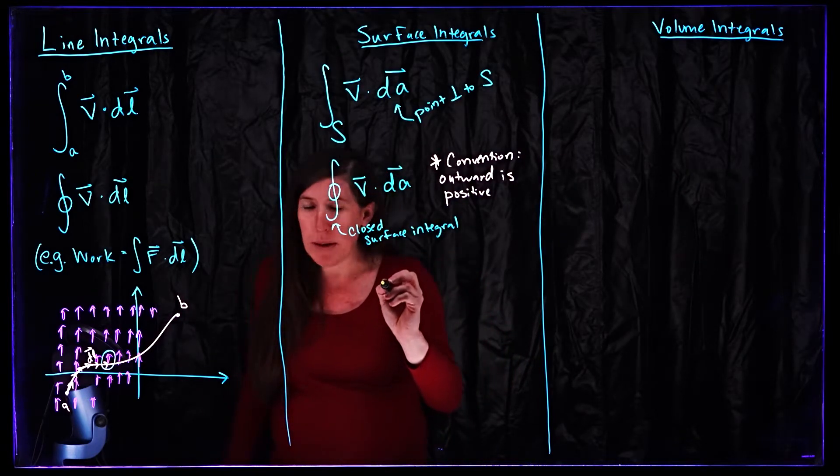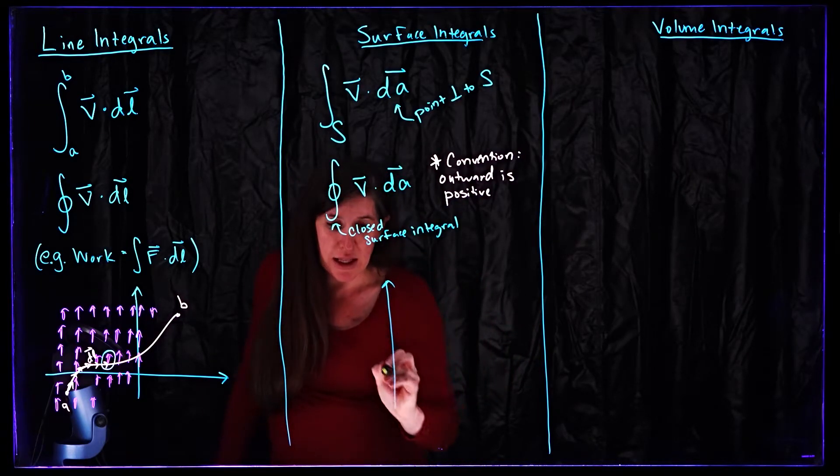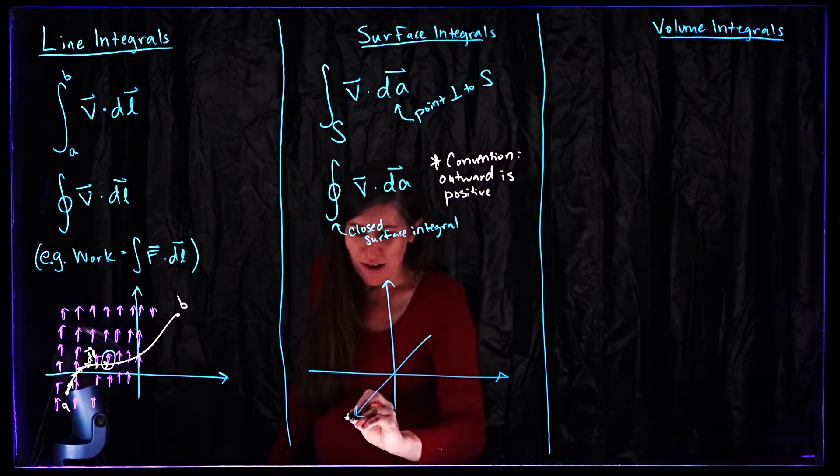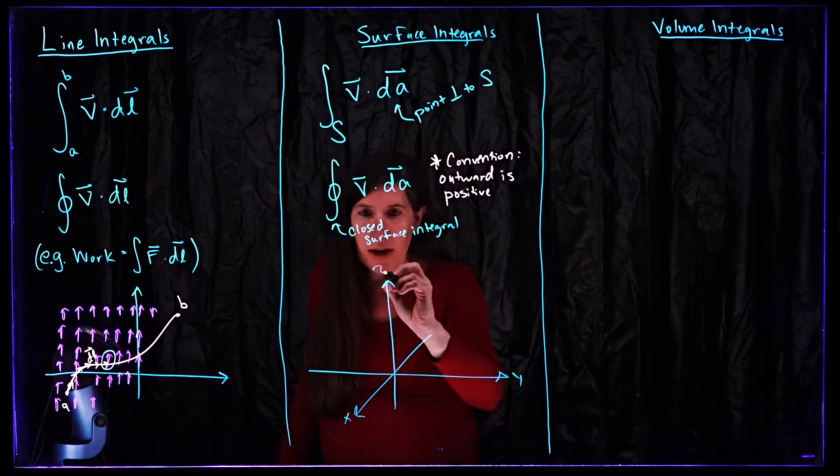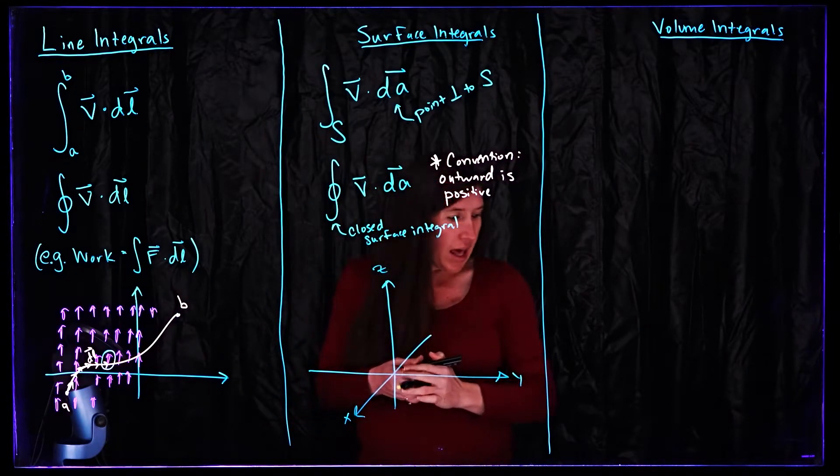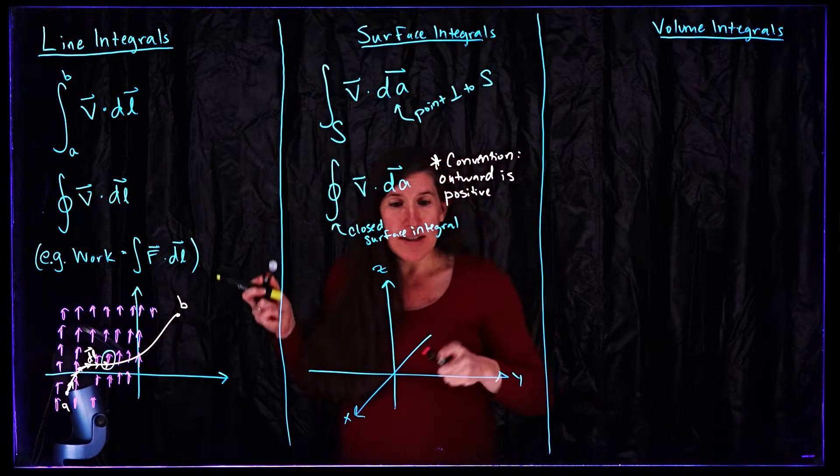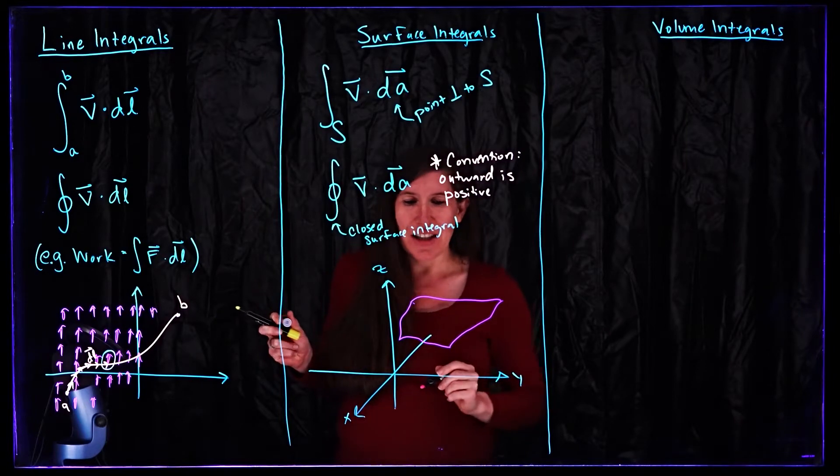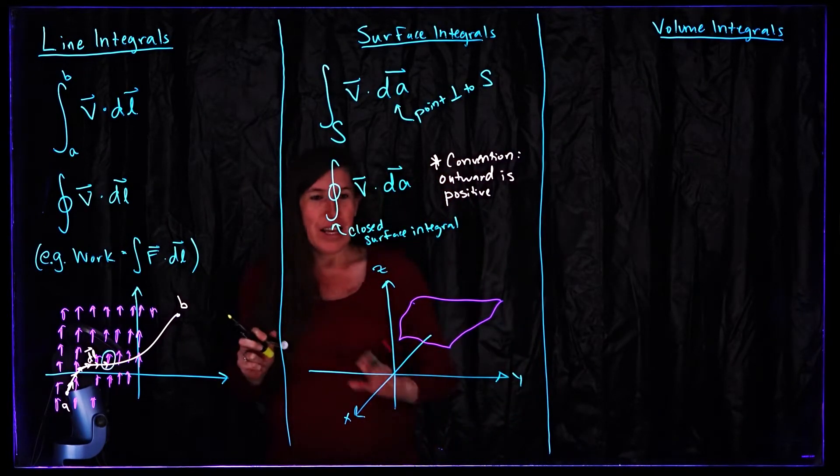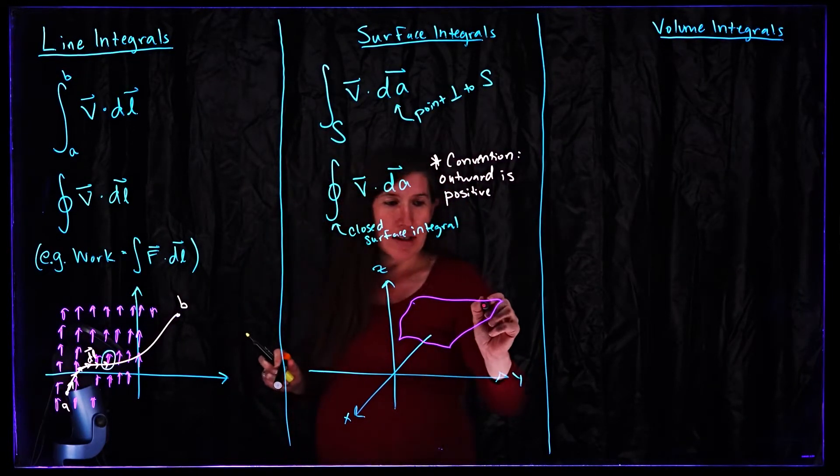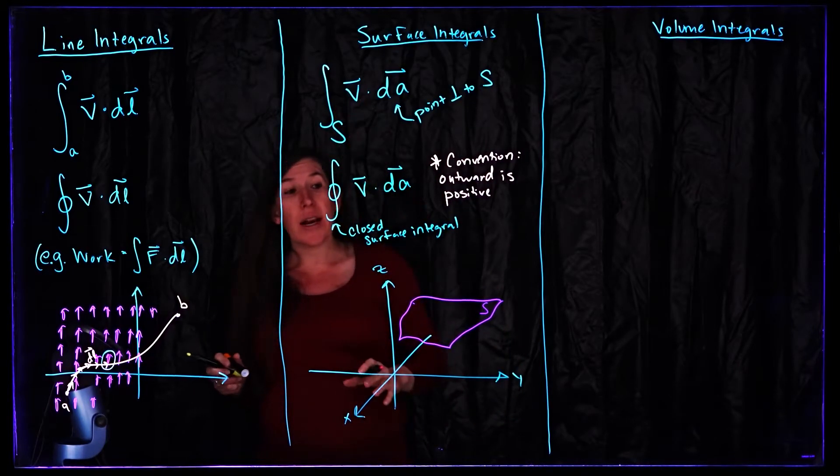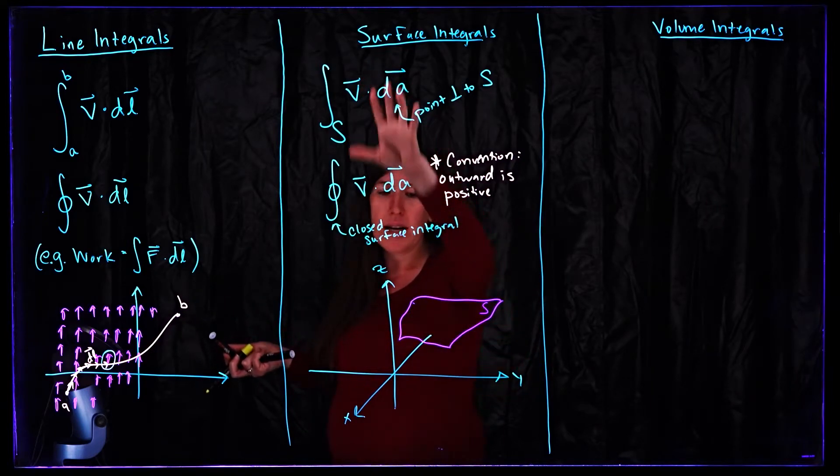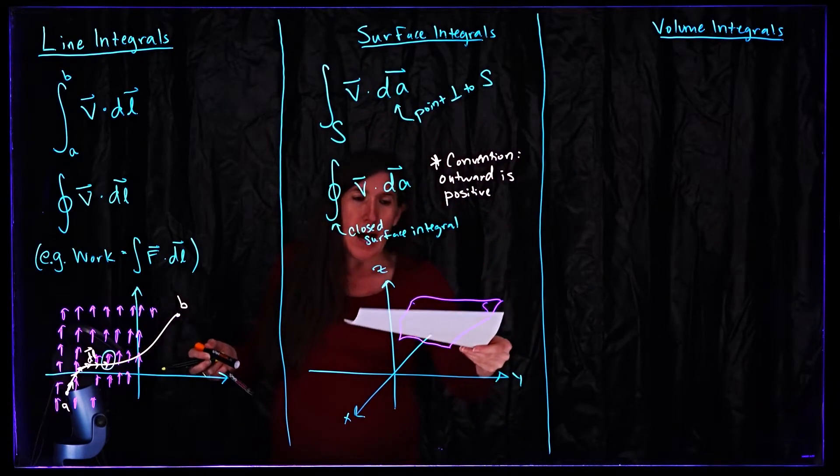Again I'll draw a picture just to make this hopefully maximally clear. We have x, y, z, we're in three-dimensional space and then we have some surface which I'll try to draw which lives in this three-dimensional space. So this is our surface s and we're going to integrate over that surface. Here the example I'm drawing it looks like it's not closed, it's just like this sheet of paper perhaps.